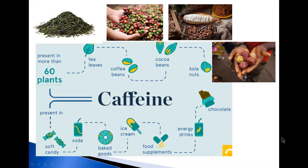Caffeine is found in the seeds, nuts, or leaves of a number of plants native to Africa, East Asia, and South America. The most well-known source of caffeine is the coffee bean, the seed of a coffee plant.